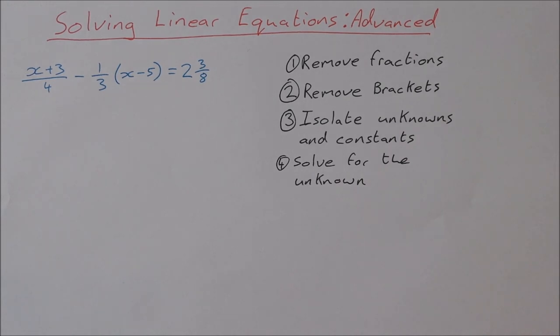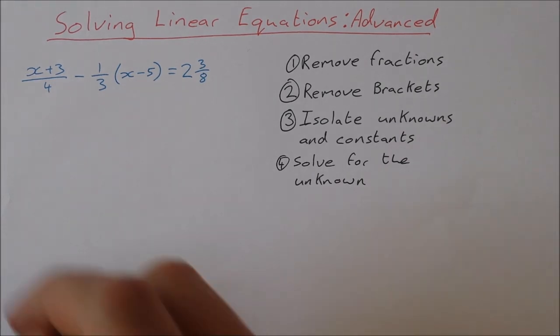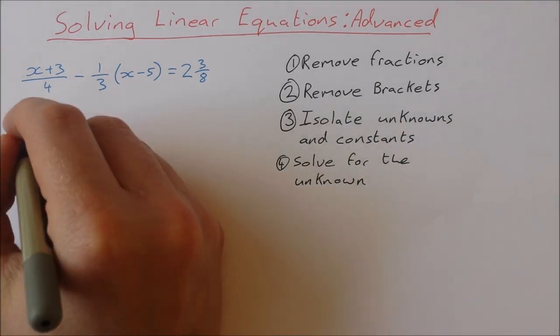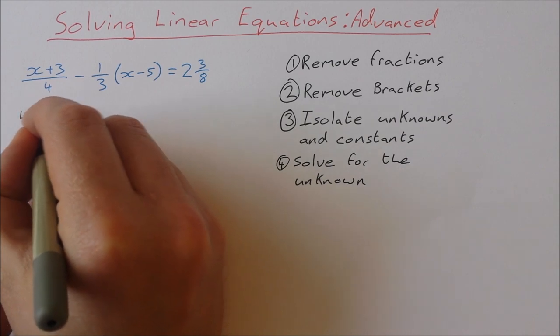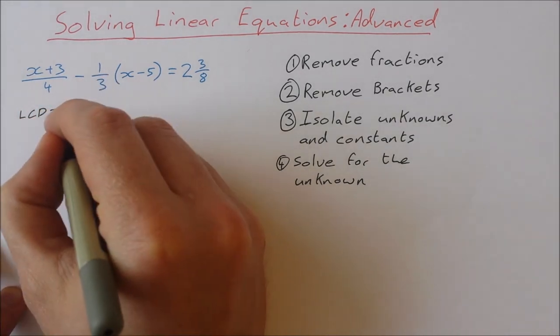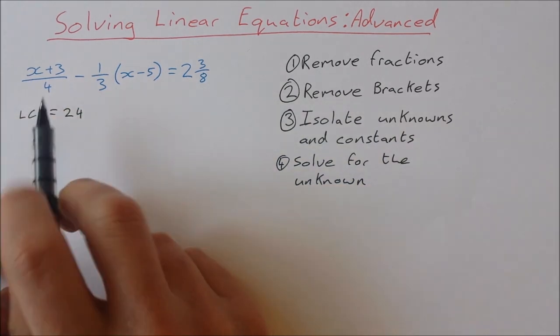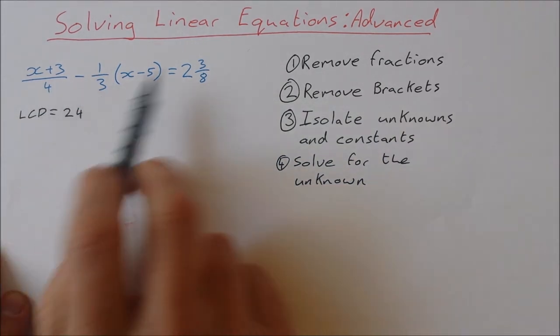So to get rid of these fractions here, what I'm going to do is I'm going to multiply every term by the lowest common denominator, which in this case is 24. So that's the lowest common denominator of 4, 3, and 8.